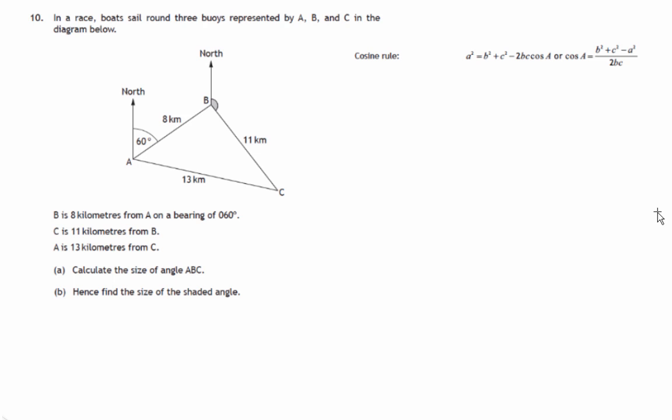This is question 10 from paper 2 from the 2014 National 5 Maths exam. We're given the position of three boys in a boat race, A, B and C.